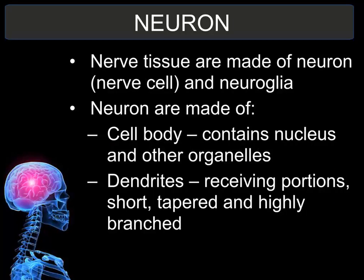The neuron is the functional unit of the nervous system. It is another word for the nerve tissue or the nerve cell, and the nervous system is made up of the neuron and the supporting cells called the neural glia.